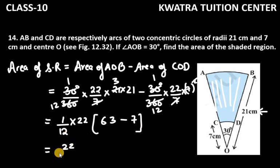So you have 22/12, then you have 63 - 7. So 63 minus 7 will be 56.